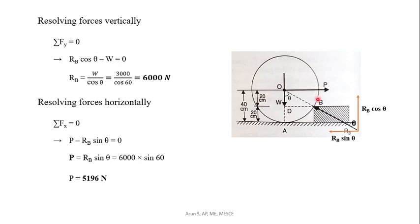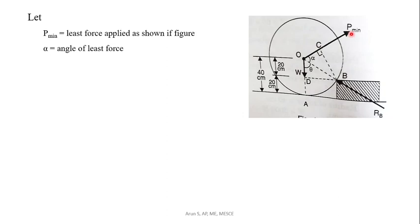For the second part, we have to find the minimum force P. Let P minimum be the minimum least force applied through the center of the roller. Let BC be the perpendicular distance from point B to the line of action of this minimum force P.